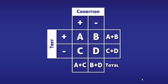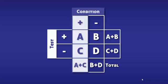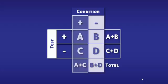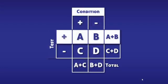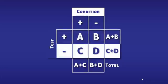This 2x2 sample table is commonly used as an aid to compare the presence of a condition with the results of a medical test. The left column includes all the people with the condition, and the right column includes all the people without it. The top row is for the positive test results, and the bottom row is for the negative test results.